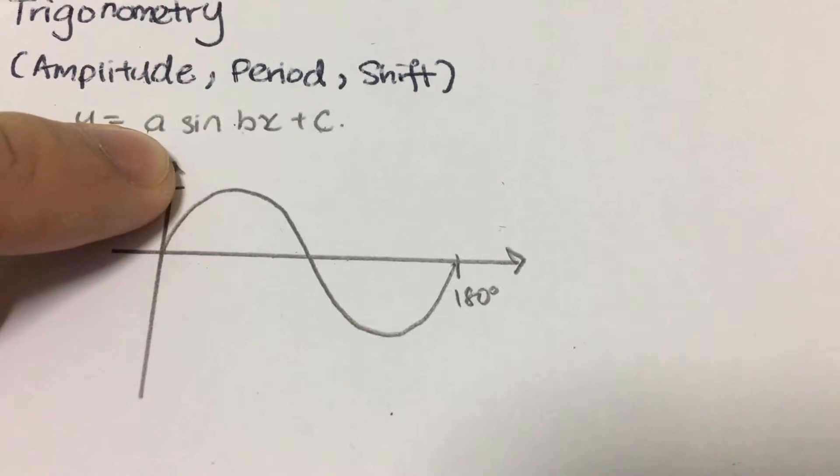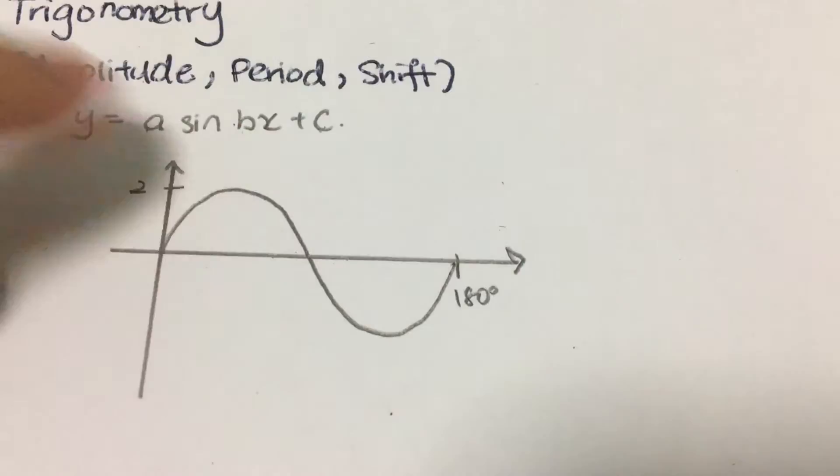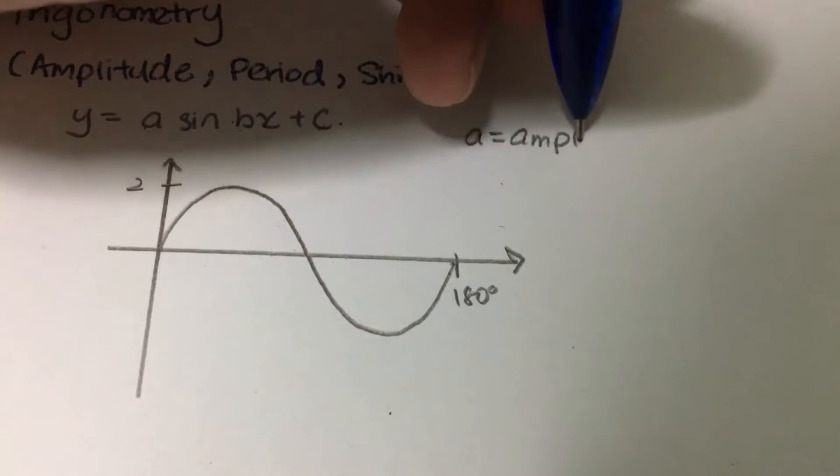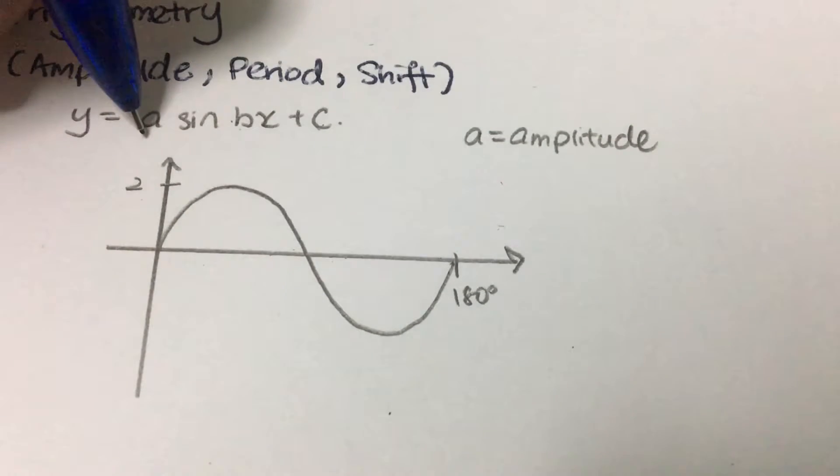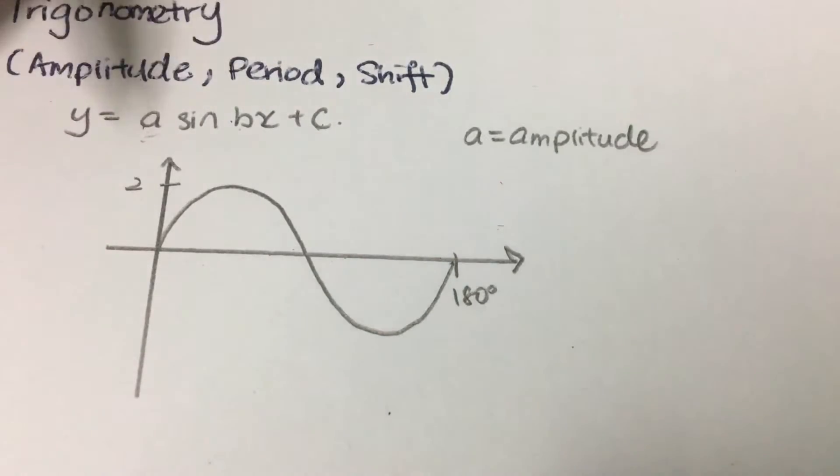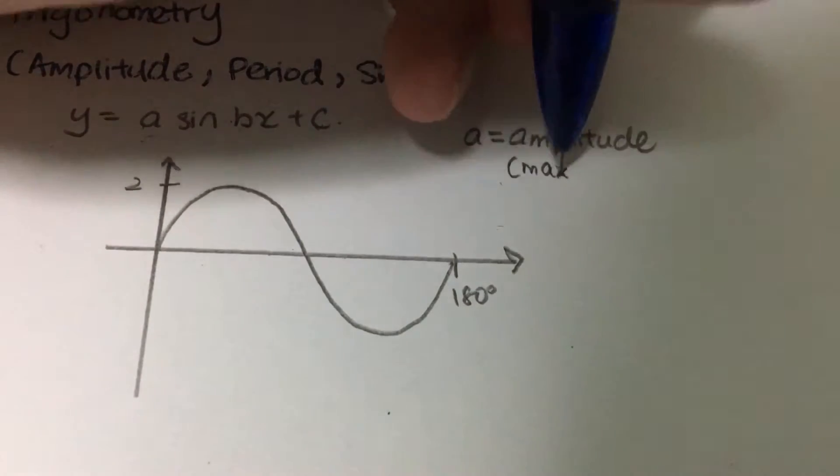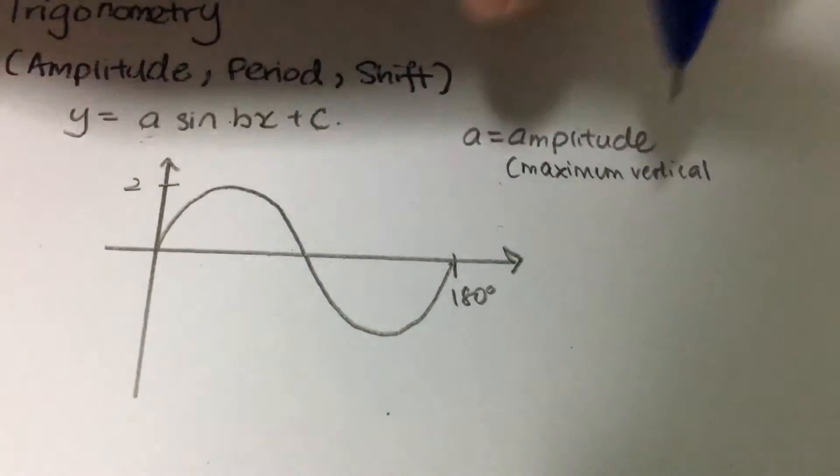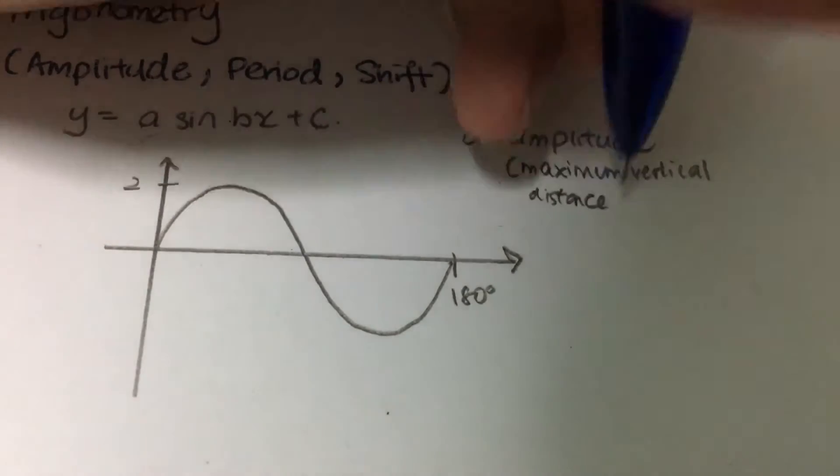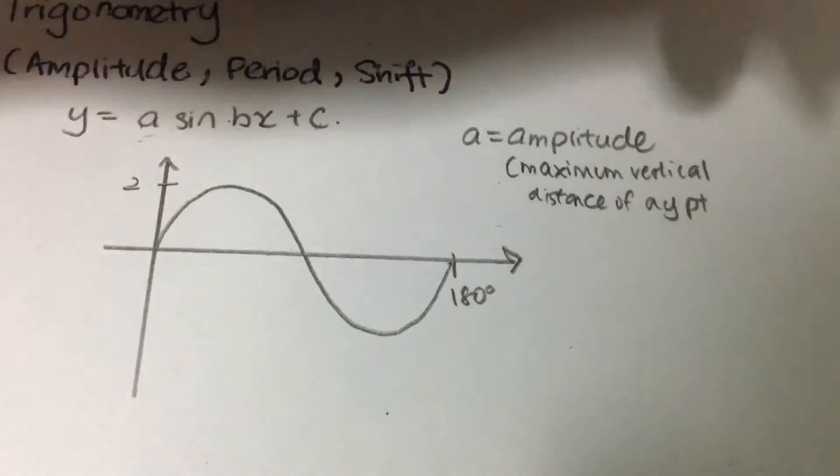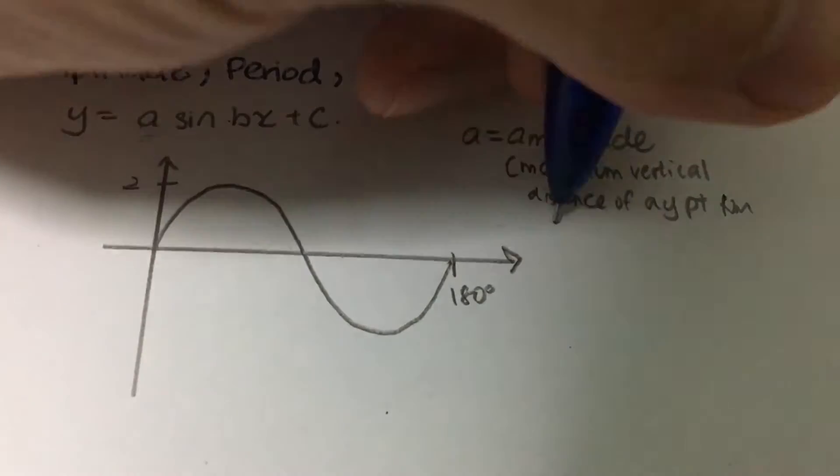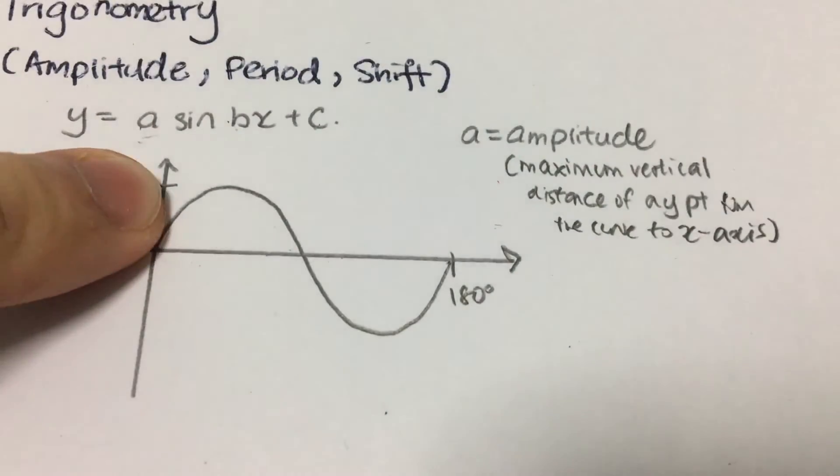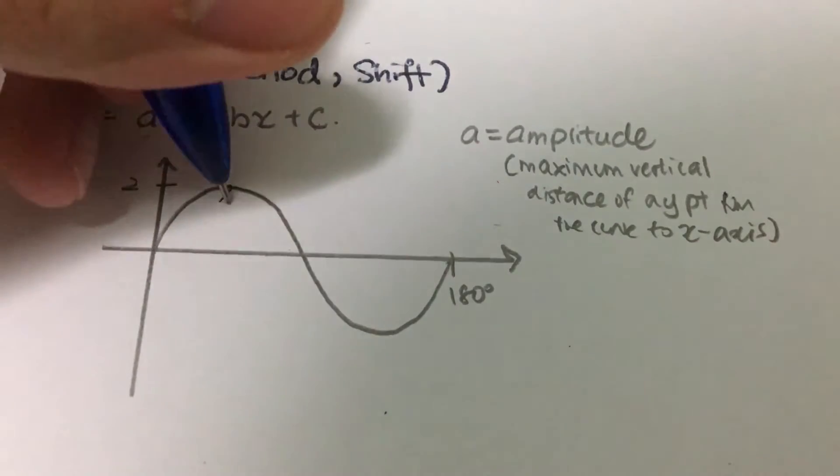Well, so let's just tackle what is a, what is b, and what is c. So basically a is the amplitude. If you were to see the equation itself, whatever coefficient that is here represents the amplitude. So the amplitude basically means it is the maximum vertical distance of any point from the curve to the x-axis. That will be the amplitude.